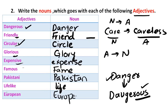For example, 'famous' is the adjective — when you convert it to a noun, you get 'fame.' Next, 'Pakistani' is the adjective and 'Pakistan' is the noun. Similarly, 'European' is the adjective and 'Europe' is the noun. I hope you will understand — thank you so much.